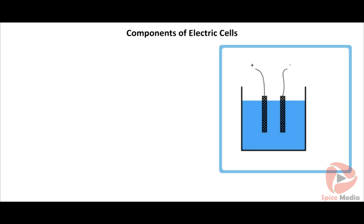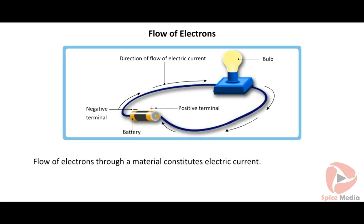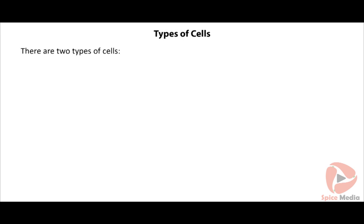We have learned that cells convert chemical energy into electrical energy. Let us now discuss the components of electric cells. It consists of two metal plates called electrodes and a chemical solution called electrolyte. Due to chemical reaction inside the cell, one plate develops positive charge and the other develops negative charge. Flow of electrons through a material constitutes electric current, and a simple circuit connects a source, a device, and conducting wires.